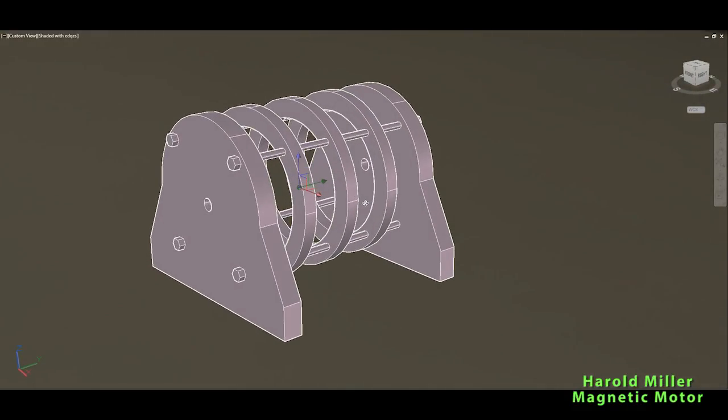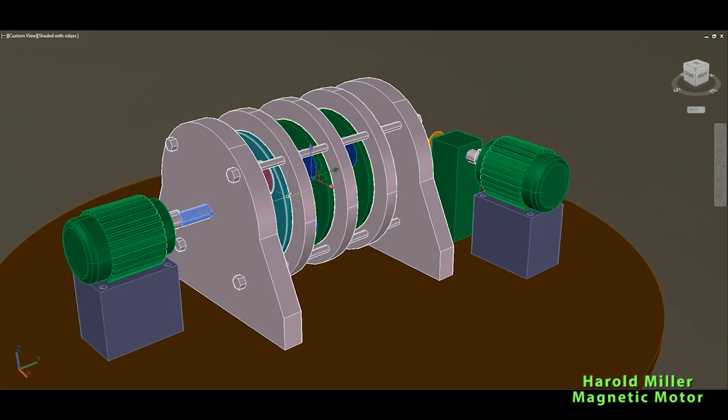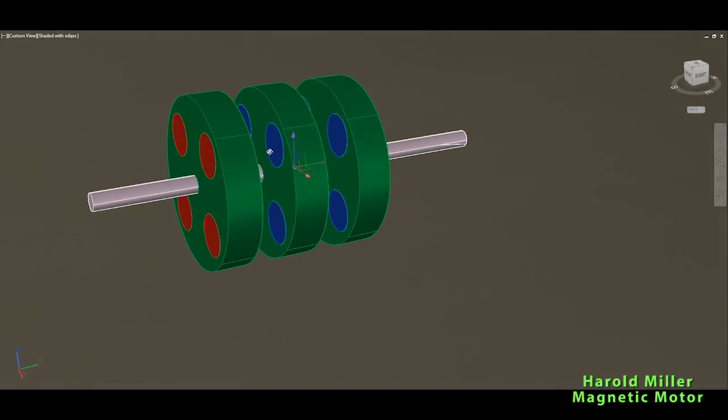This is the main output shaft—the main shaft, three rotors with permanent magnets. And now you can see what's here, the key. So these magnets, two of them are positioned so they attract each other.